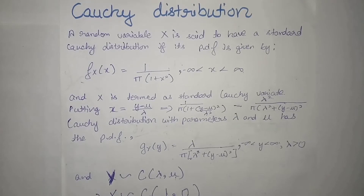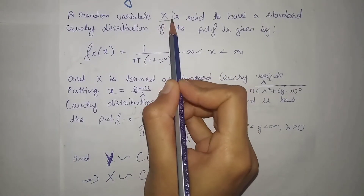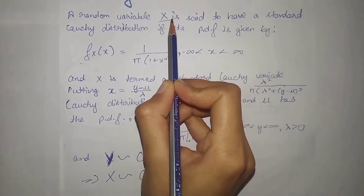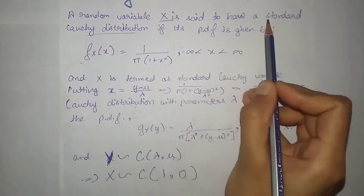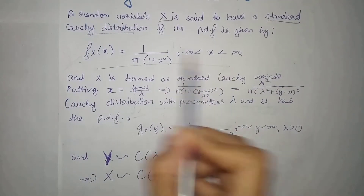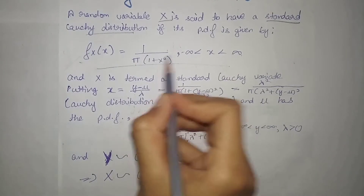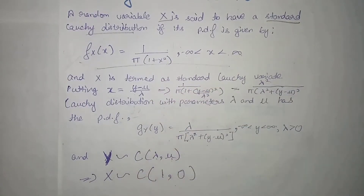Today we will first study the PDF of the standard Cauchy variate, and then we will study the PDF of the simple Cauchy variate with two parameters. If we have a random variable x and it is a standard Cauchy variate, then its PDF will be equal to 1 divided by π(1 plus x squared), where x lies between minus infinity and infinity.